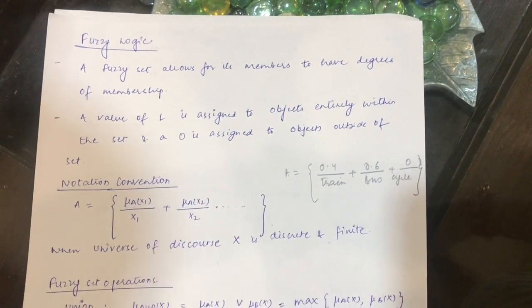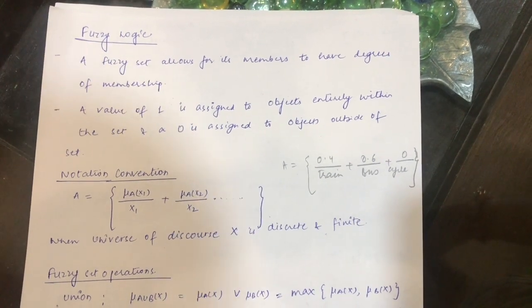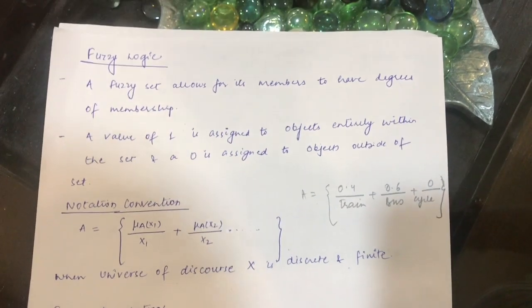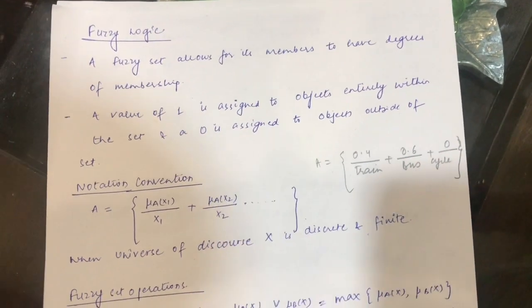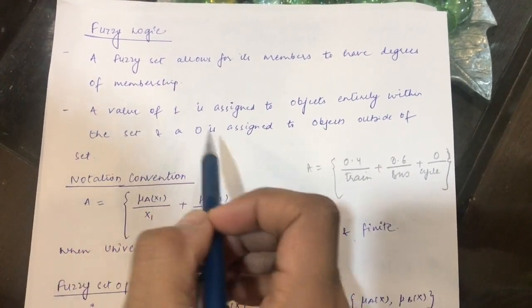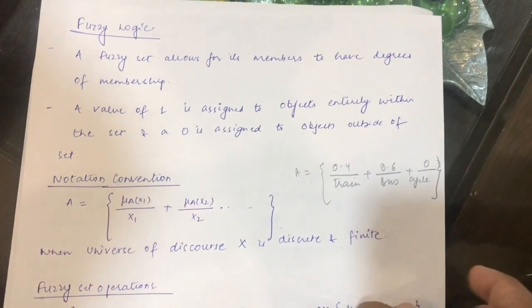Hello friends, in this tutorial I'll be talking about fuzzy logic. Unlike in classical sets where we can have a value of only 0 and 1, in fuzzy sets we can have any value between 0 and 1, inclusive of 0 and 1. A value of 1 is assigned to objects entirely within the set and a 0 is assigned to objects outside the set.